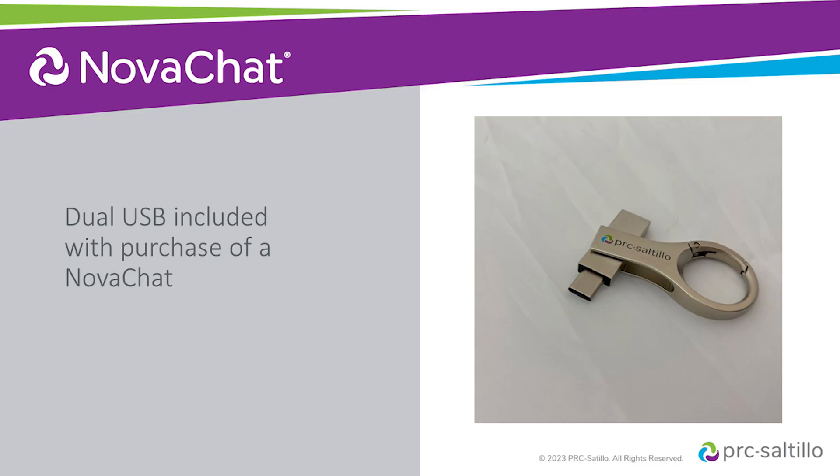You can use the dual USB that comes with your NovoChat to back up and transfer your customized vocabulary file. Start by swiveling it so that the smaller side is visible. For some NovoChat devices this will be a USB-C end, and for some NovoChat devices this may be a micro USB end.